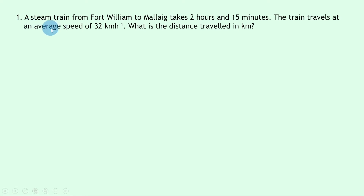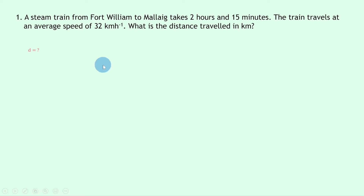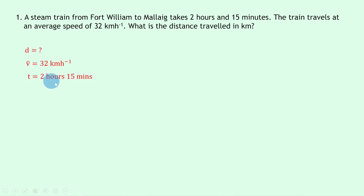So let's get started. Question one says: a steam train from Fort William to Mallaig takes two hours and 15 minutes. The train travels at an average speed of 32 kilometers per hour. What is the distance traveled in kilometers? Writing down what we know from the question: we're trying to find the distance d, the average velocity v-bar is 32 kilometers per hour, and the time is two hours and 15 minutes.